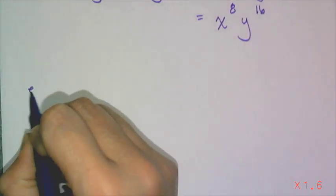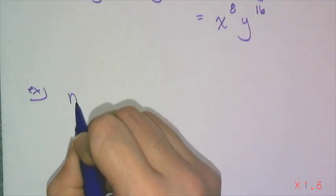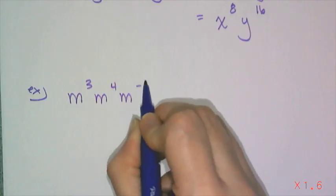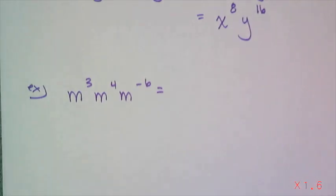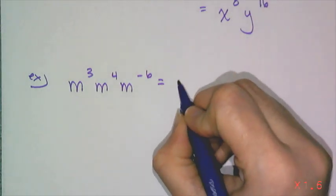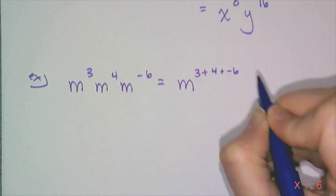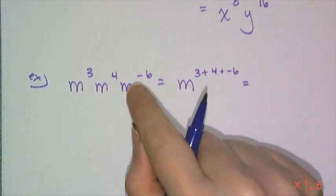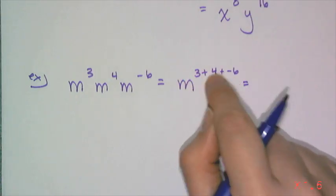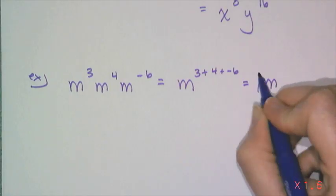This rule also works with negative exponents. So if I have m cubed times m to the fourth times m to the negative sixth, instead of getting rid of the negative exponent by taking the reciprocal, I can just use the product rule and add up all the exponents, taking into consideration that that's a negative six. So it's 3 plus 4 plus negative 6, which gives me m to the first power, which is just m.